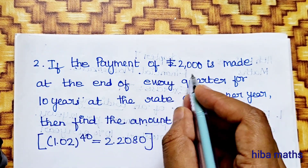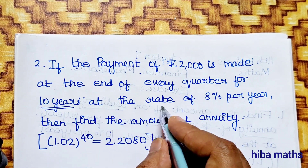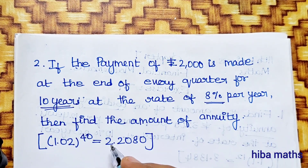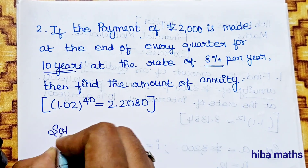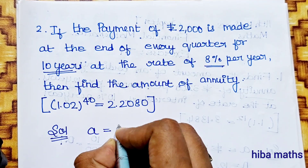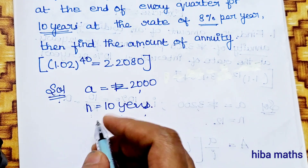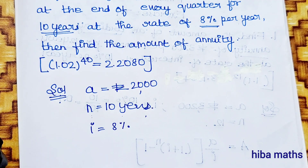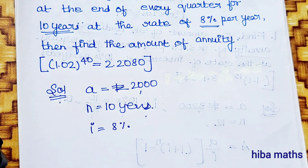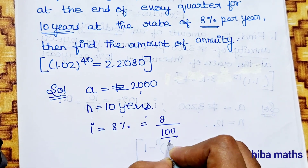Second question: A payment of Rs.2000 is made at the end of every quarter for 10 years at the rate of 8% per annum. Find the amount of annuity. Since payments are quarterly, i equals 8% divided by 4, which is 8 by 100 divided by 4, giving i equals 0.02.